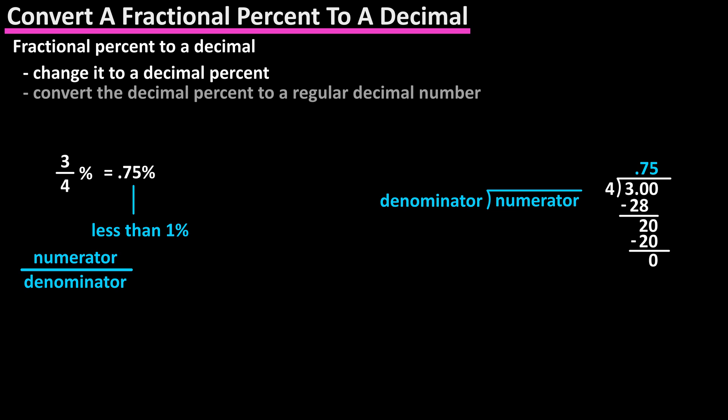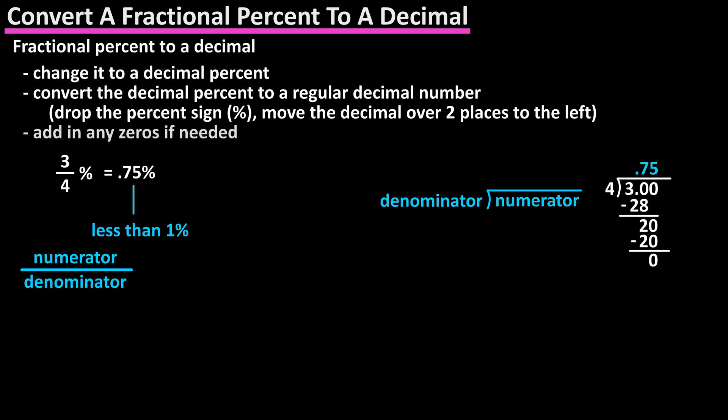Now we need to convert the decimal percent to a regular decimal. To do this, we drop the percent sign, move the decimal 2 places to the left, and add in any zeros if needed.